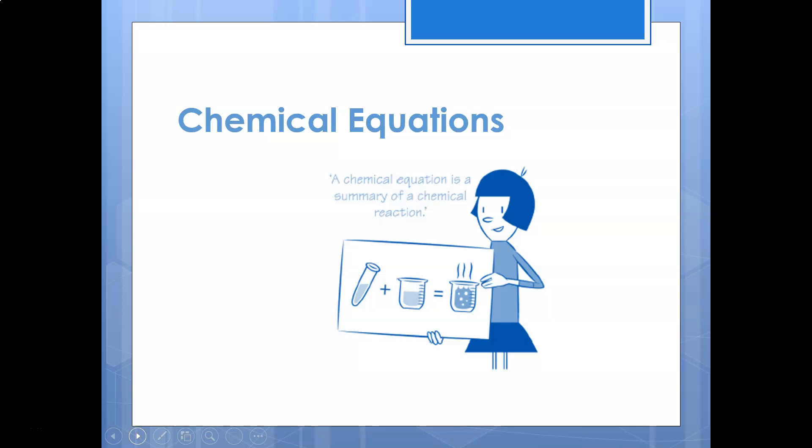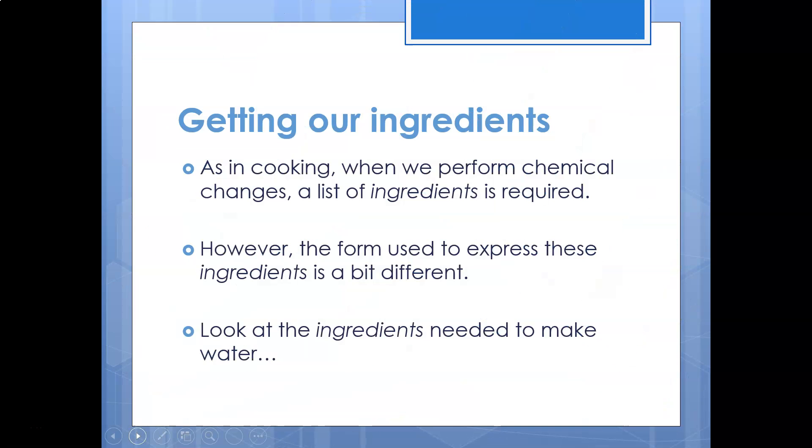What is a chemical equation? It's a summary of what's occurred in our chemical reaction. Let's think about it: if we're cooking we have ingredients. For example we might have an egg, flour and milk. We're going to be making pancakes. We've got egg, flour, milk and we mix them together, fry them up, we get pancakes.